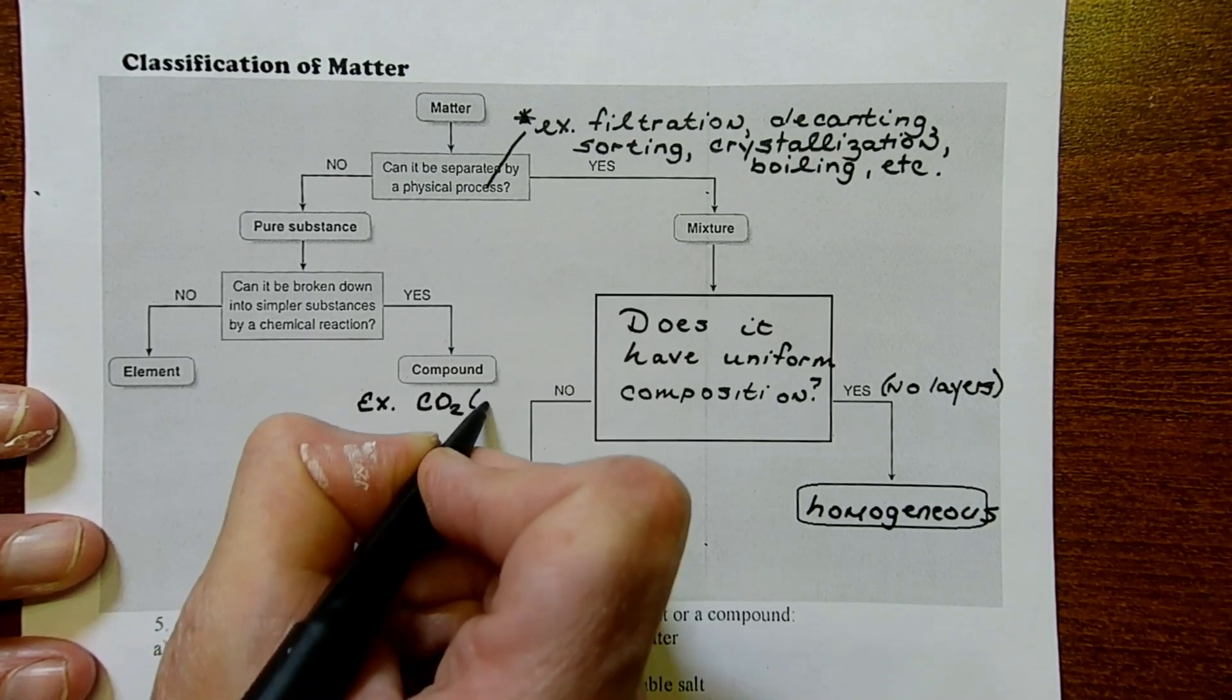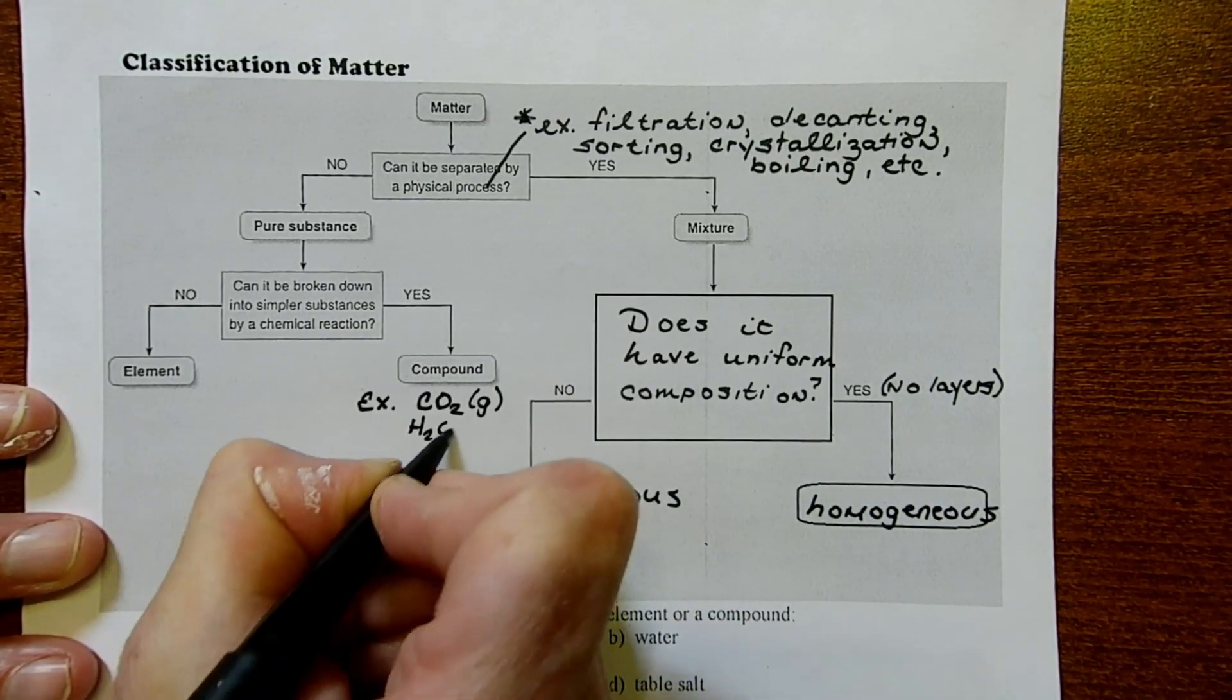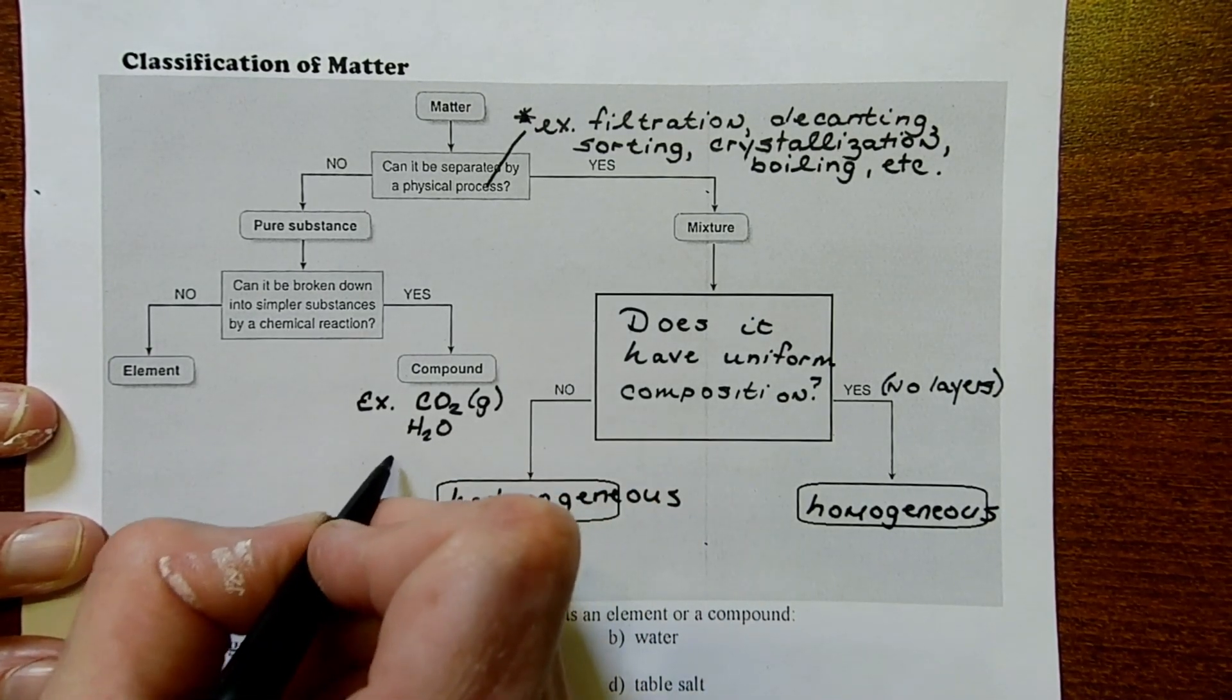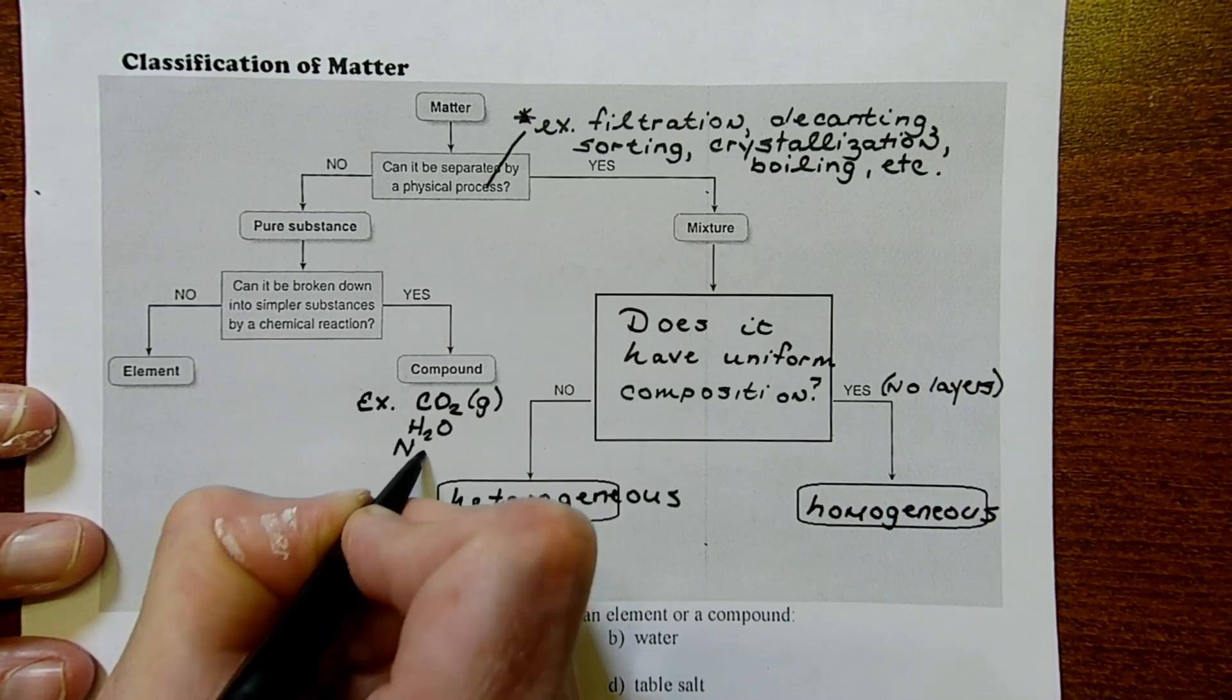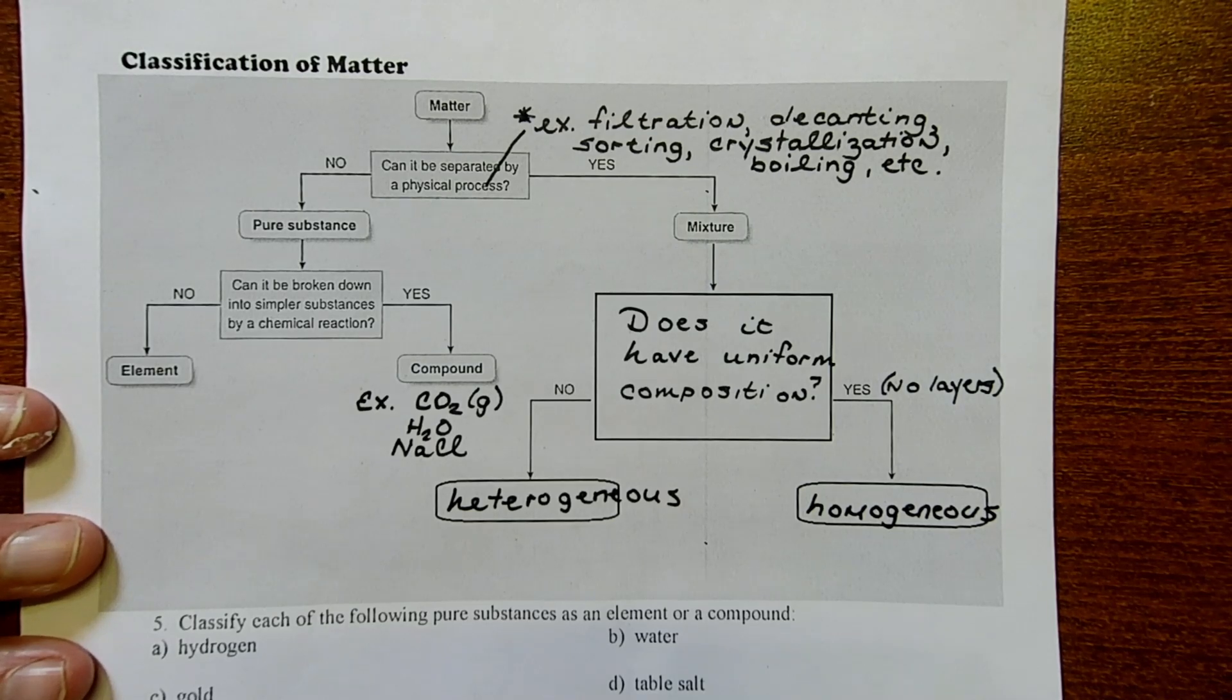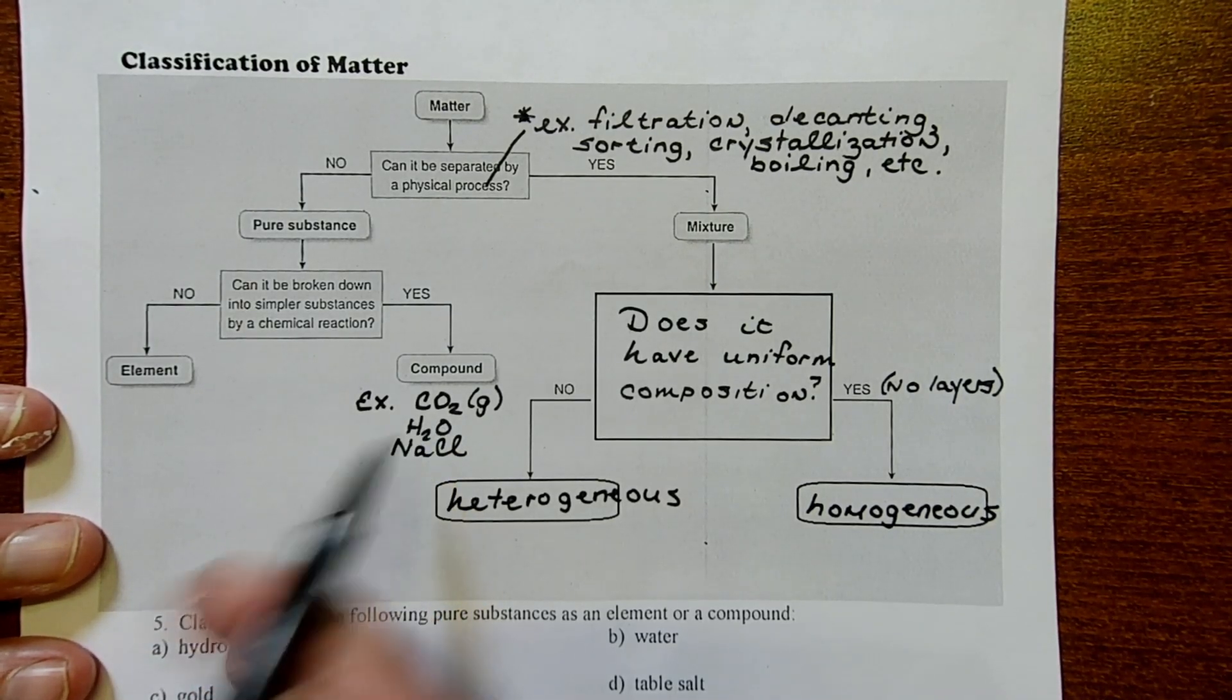Carbon dioxide is a gas. Water is another great example of a compound. That could be liquid, gas, solid, a whole bunch of different things. Sodium chloride, table salt, another compound. Those things can be broken down by chemical processes.